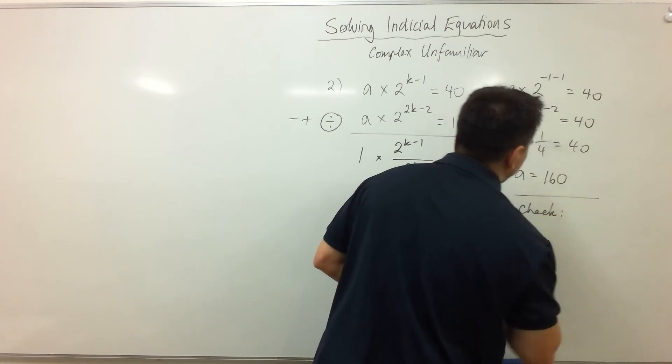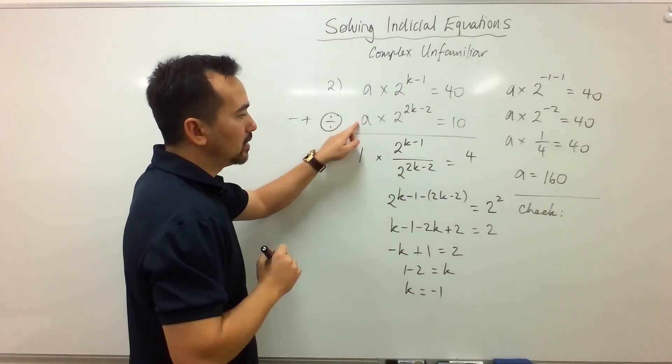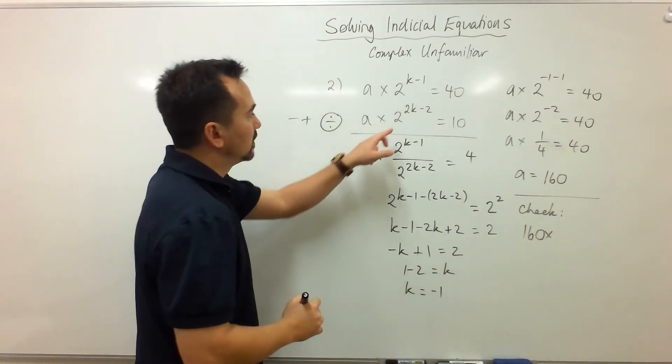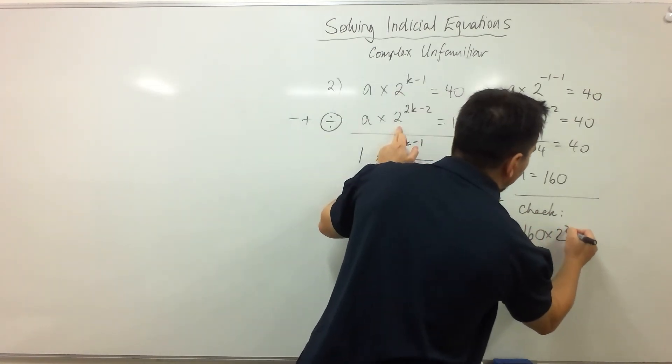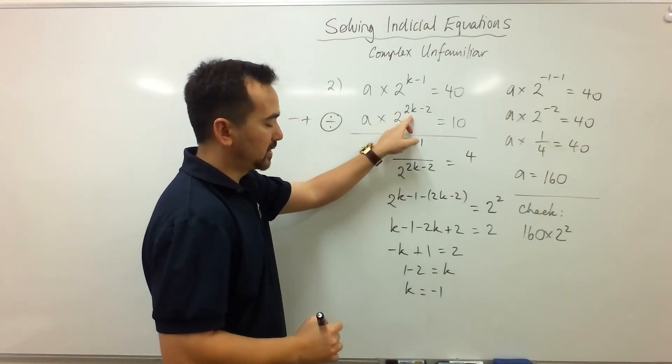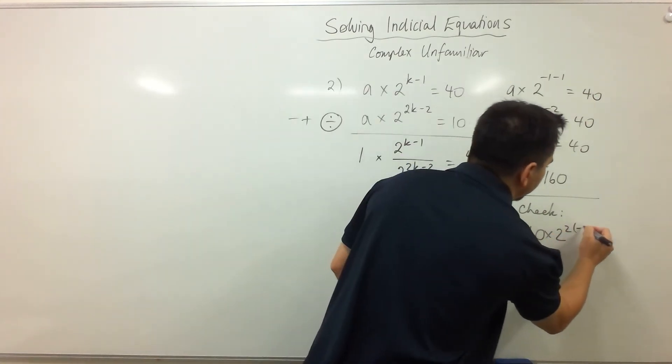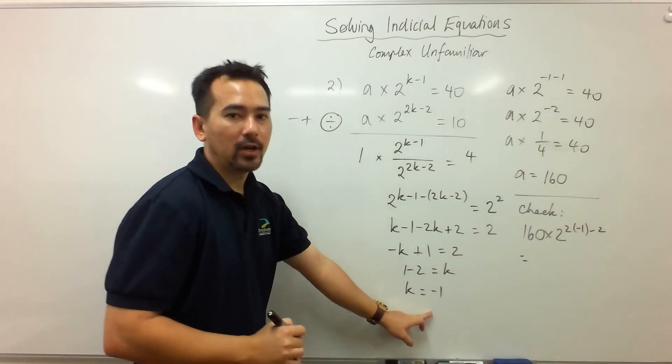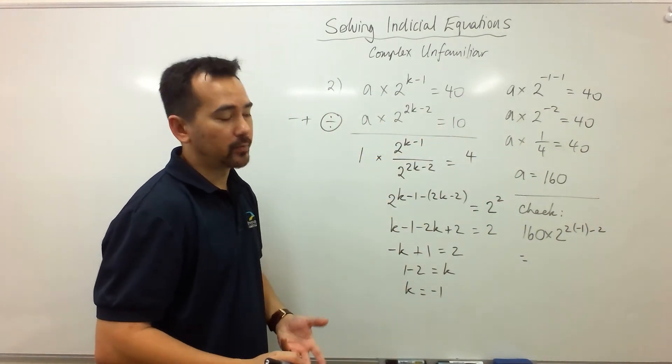and we're going to say a, which was 160, times by 2 to the power, 2 times k, which is negative 1, take away a further 2, hopefully it will work out to be 10, and if it does, we know we've done it right.